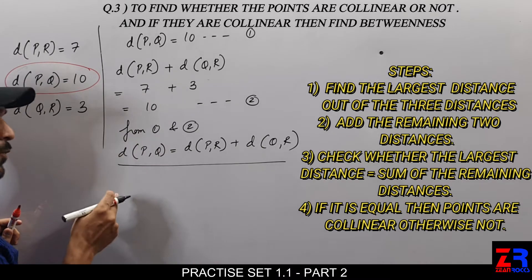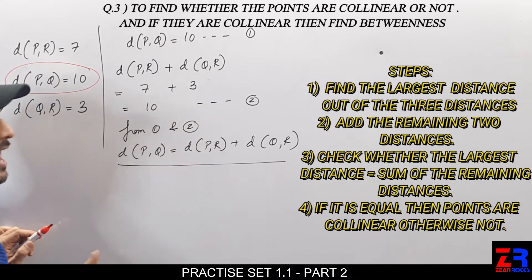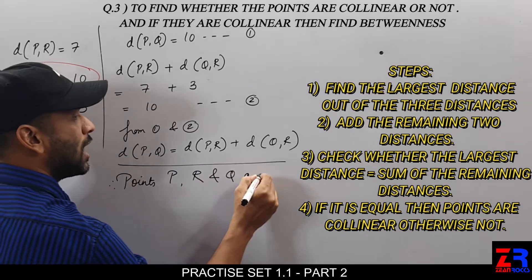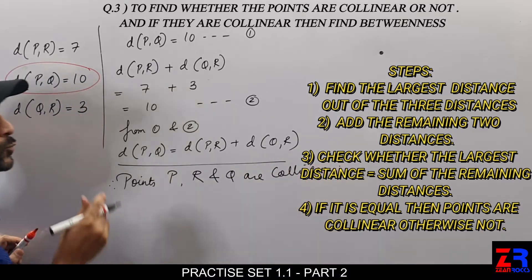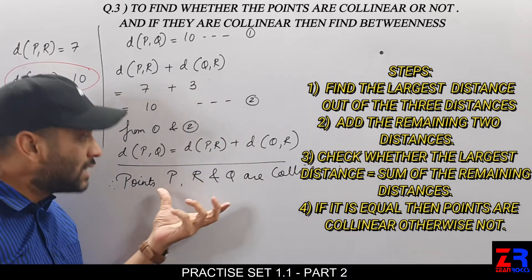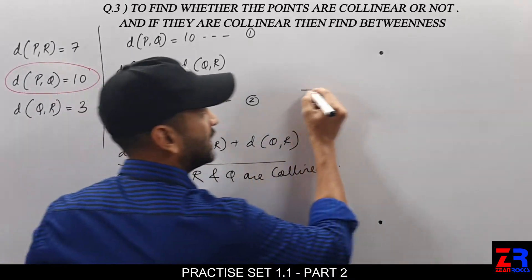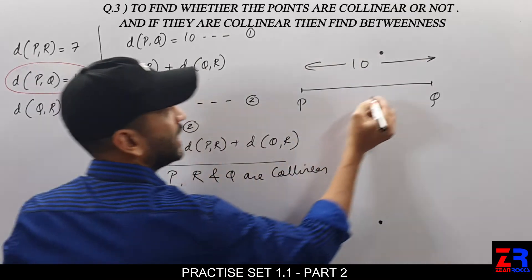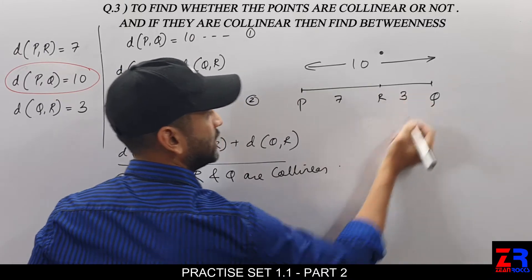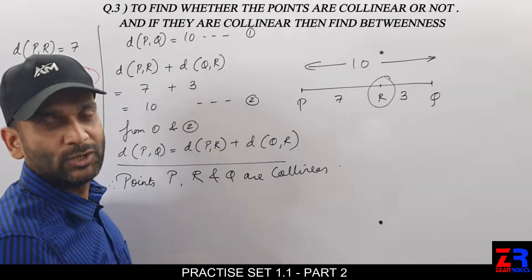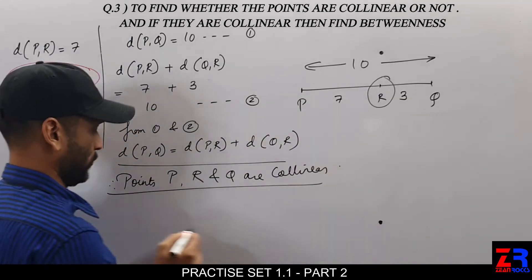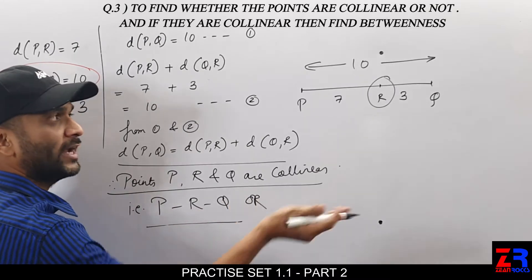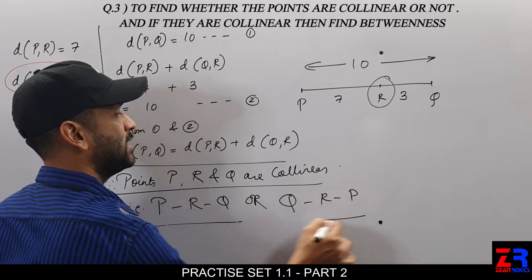That means these points are collinear because the condition is satisfied. Therefore, points P, R and Q are collinear. Now you will ask: how do we know that point R is lying between P and Q? The biggest side is PQ which is 10. PR is 7 and QR is 3. That means point R is lying between P and Q. The betweenness is written as P–R–Q, meaning R is in between P and Q. Or we can also write Q–R–P.